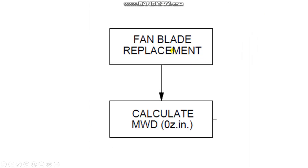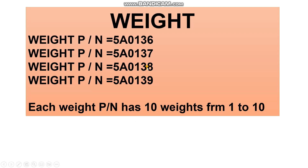For fan blade replacement, you must calculate the moment weight. If any fan blade is replaced, record the moment weight of the original blade, then install a replacement with a matching moment weight. There are balance weights with four part numbers, and each part number has ten weights — from 1 to 10 — each with a different moment weight value.